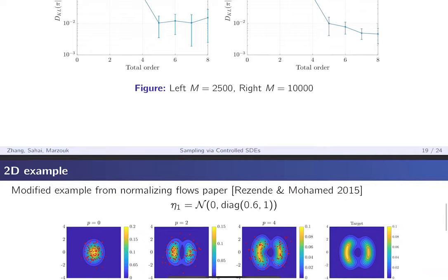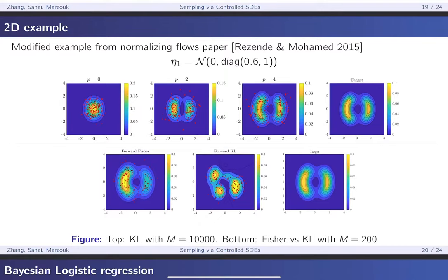The next example is a modified 2D example from a normalizing flows paper. We chose T = 1 and a reference density accordingly. Using a total-order basis, as you increase the order, the approximation approaches the target more and more — the points in red end up well-distributed. On the top we used the KL objective with 10,000 samples, and on the bottom we compared with the Fisher divergence. Because the Fisher divergence uses gradient information not used in the KL divergence, it's more stable: with just 200 gradient evaluations of the target, the Fisher divergence captures most features of the target, whereas with KL at 200 evaluations you get essentially junk.